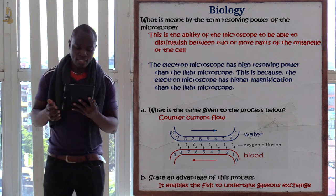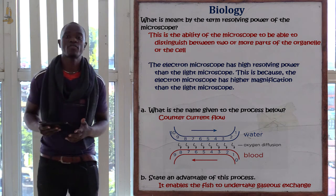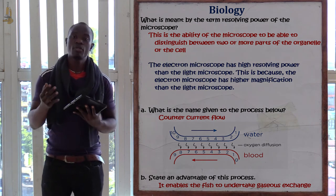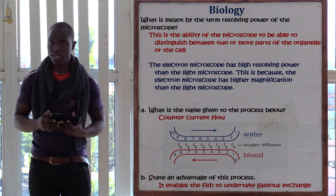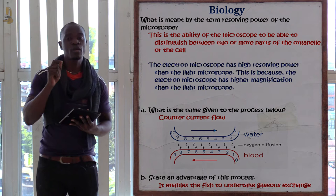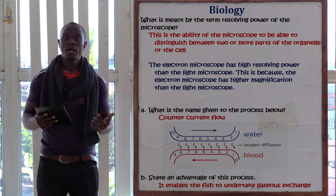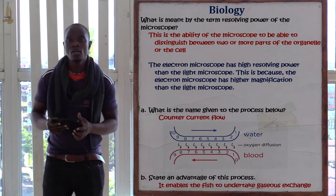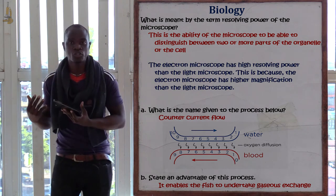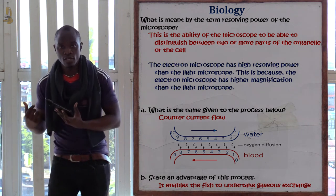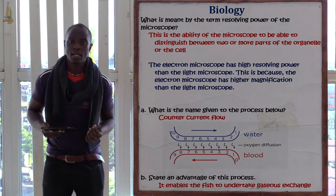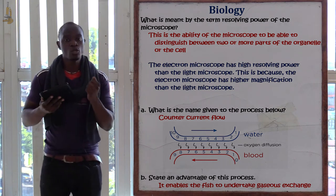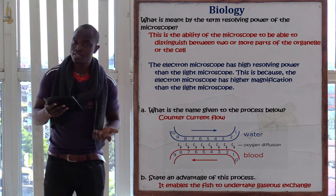The resolving power of the microscope is the ability of the microscope to distinguish or differentiate between two or more parts of the cell. The electron microscope has very high magnification and therefore very high resolving power, while the light microscope has lower magnification and thus lower resolving power.